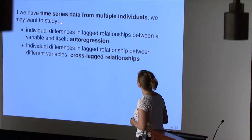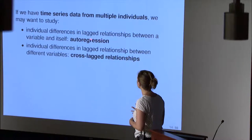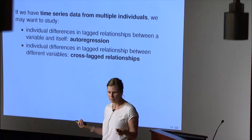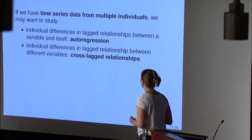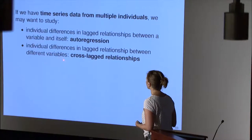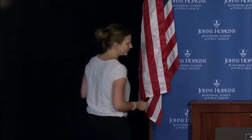What we can do is look at individual differences in lag relationships between a variable and itself — that's differences in the autoregression. Regression between a variable and itself is referred to as autoregression. But we can also look at individual differences in lag relationships between different variables, and that's what we refer to as cross-lagged relationships — crossed from one variable to another, and lagged because it's at different time points.